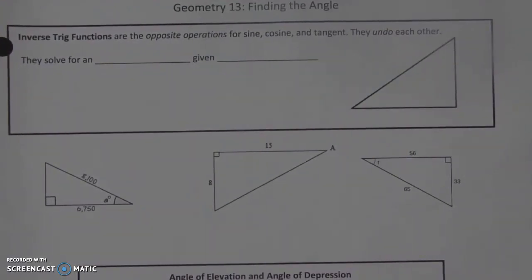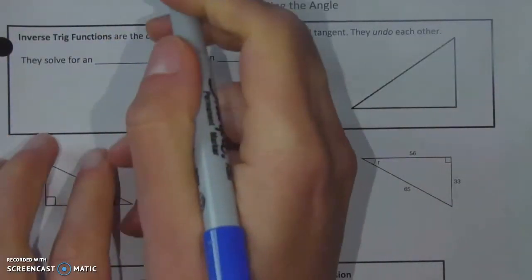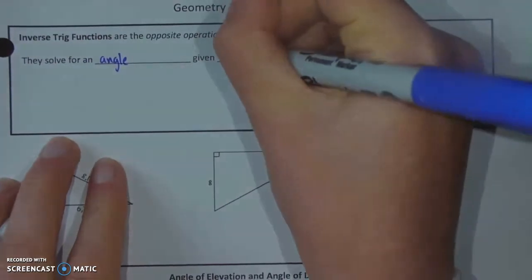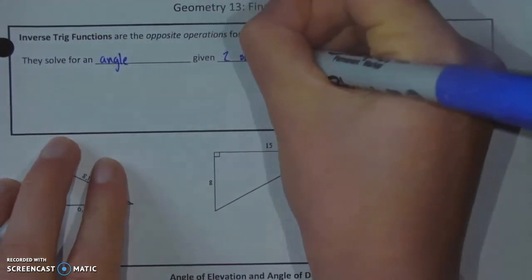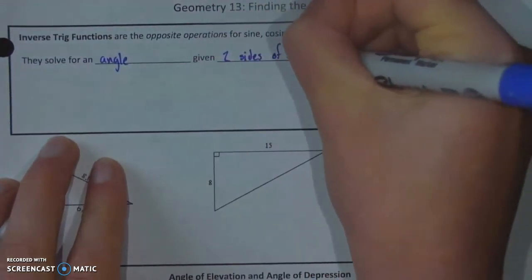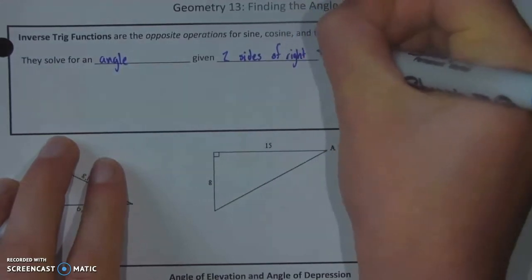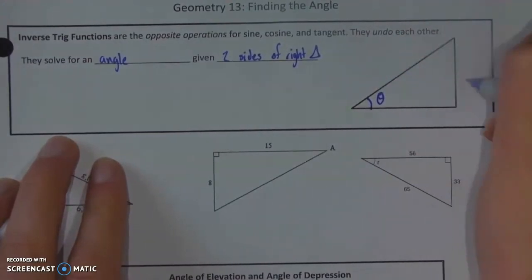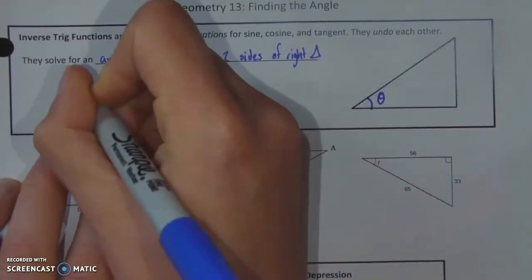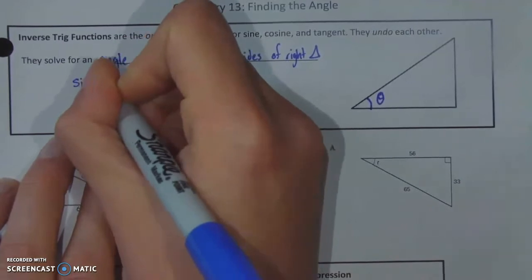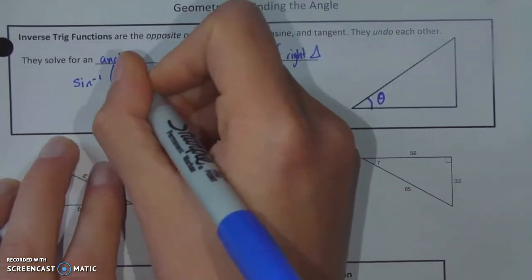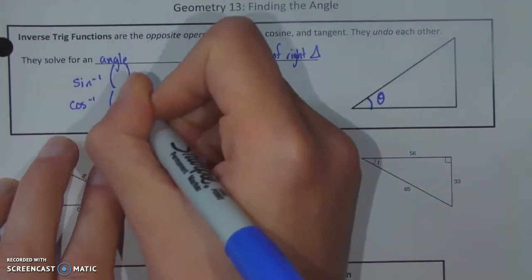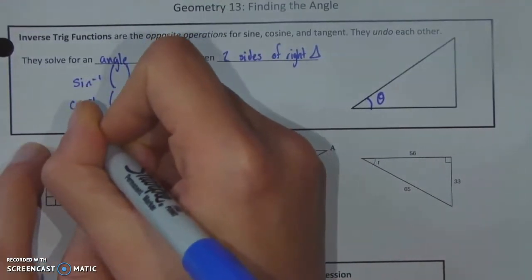Inverse trig functions are super useful because they solve for an angle when you've been given two sides of a right triangle. Anytime that you need to find your theta rather than the sides themselves, you'll be using either the inverse sine, the inverse cosine, or the inverse tangent.